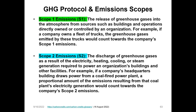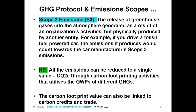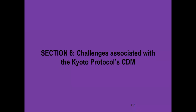Scope one emissions are the release of greenhouse gases from sources such as buildings and operations directly owned or controlled by an organization. For example, if a company owns a fleet of trucks, the greenhouse gases emitted by those trucks count as scope one emissions. All emissions can be reduced to a single value — carbon dioxide equivalent — through carbon footprinting activities that utilize global warming potentials (GWPs) of the various greenhouse gases. The carbon footprint value can also be linked to carbon credit and debt.